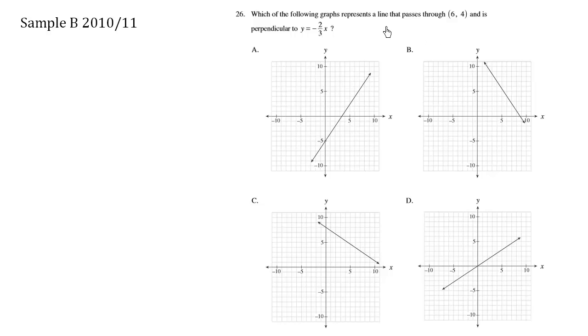So let's take a look at the point (6,4). 6,4 is here, and then we have 6,4 here. We have 6,4 here, and we have 6,4 here. So they're all passing through (6,4).